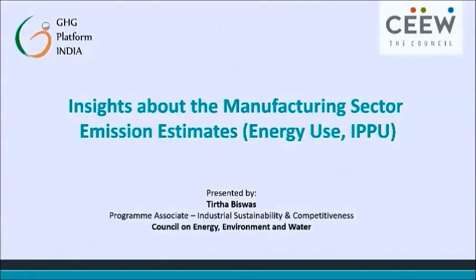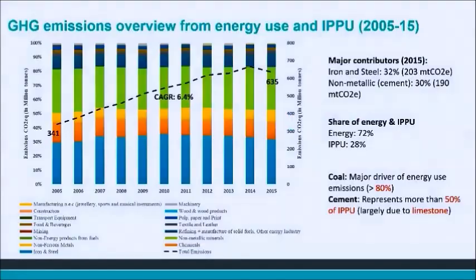Today I'm going to talk about the broad-level trends we have observed in the manufacturing sector emission estimates. The industry sector emission estimates have used a bottom-up approach, looking at energy consumption reported by more than 80-plus fuel types and across more than 2 million manufacturing enterprises. The primary source of data was the Annual Survey of Industries as published by the Ministry of Statistics and Programme Implementation, MOSPI.